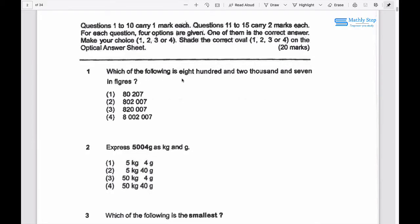Question 1: Which of the following is 800 and 2,000 and 7 in figures? So 800 and 2,000 and 7 is this. This is the correct answer.